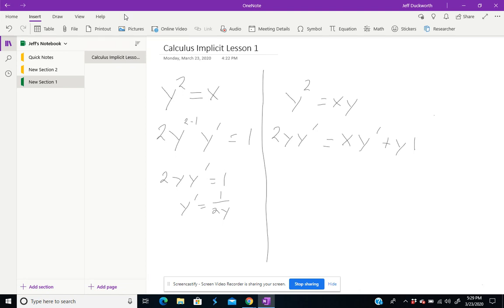So I do want to isolate the y prime. I want to solve for that. So I'm going to bring those both on the other side. So I'm going to subtract each side by x y prime. So I get over here 2y y prime minus x y prime equals just 1. Now I can factor out a y prime.